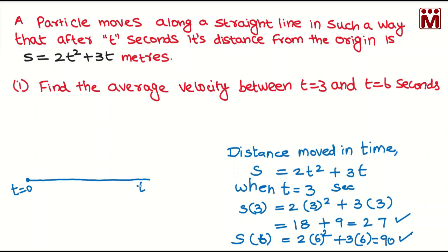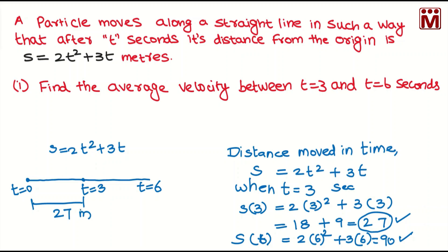When time is equal to 6 seconds, the distance equation is 2t squared plus 3t. When t equal to 3 seconds, the distance is 27 meters. When time is equal to 6 seconds, it is 90 meters. So 0 to 3 seconds is 27 meters, and 0 to 6 seconds is 90 meters.